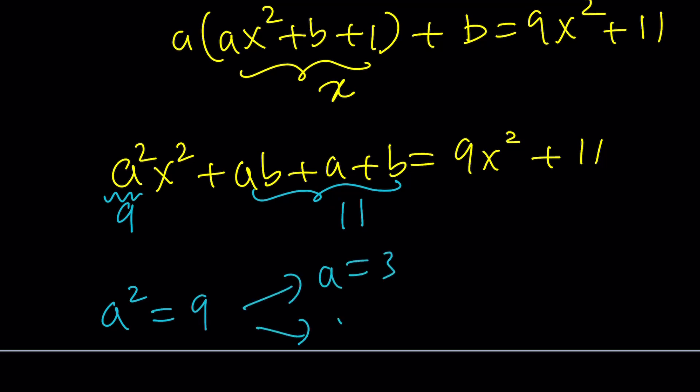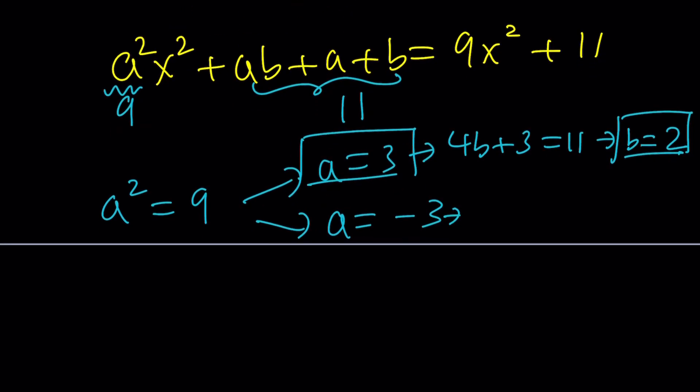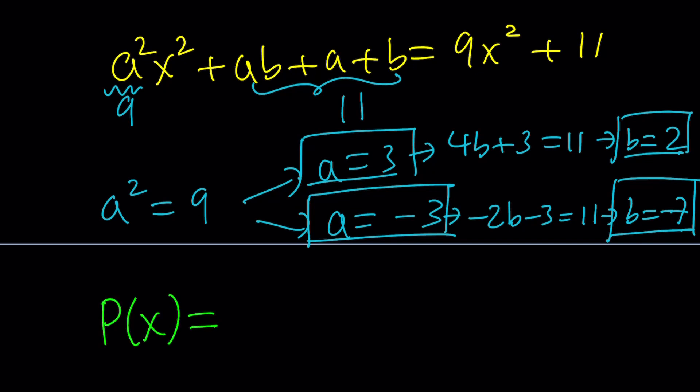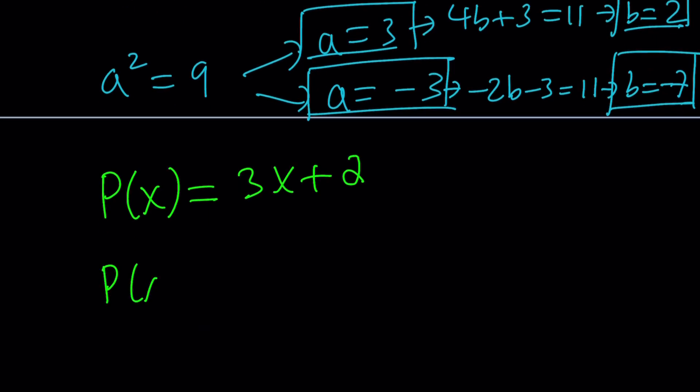a squared equals 9 gives us two values, a equals 3, or a equals negative 3. The second equation with a equals 3 gives us 3b plus b, which is 4b, plus 3 equals 11, which gives us b equals 2. So a equals 3 implies b equals 2. If a is equal to negative 3, that value is going to give us negative 3b plus b, which is negative 2b, plus a which is negative 3, equals 11. This means negative 2b is 14, which means b equals negative 7. So a equals negative 3 implies b equals negative 7. This means there are two solutions to our equation. P of x can be 3x plus 2, or P of x can be negative 3x minus 7.